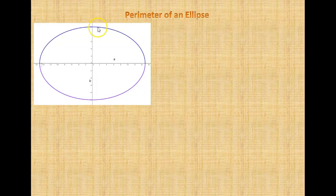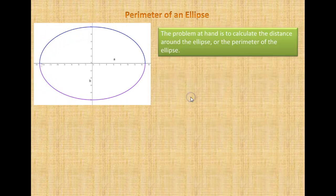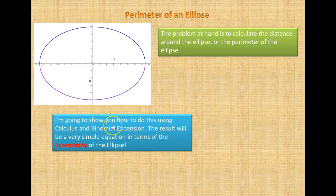We have an ellipse here, and what we want to do is calculate an equation that will give us the distance around this ellipse. The problem is to calculate the distance around the ellipse, or the perimeter of the ellipse. I'm going to show you how to do this using calculus and the binomial series expansion. The result will be a very simple equation in terms of the eccentricity of the ellipse.